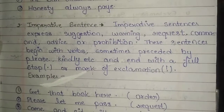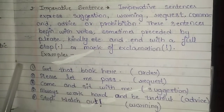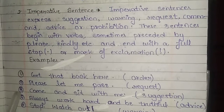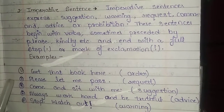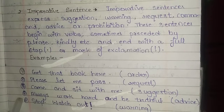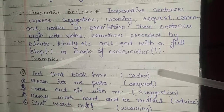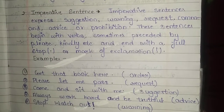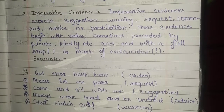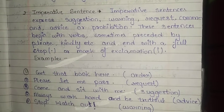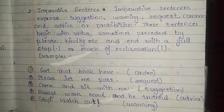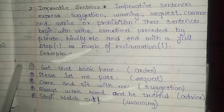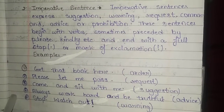In this definition I have explained and given you 5 examples, because all these are of different types: one is order, second is request, third is suggestion, fourth is advice, and fifth is warning. All these are things which come in an imperative sentence, so you have to write these 5 examples in this definition.